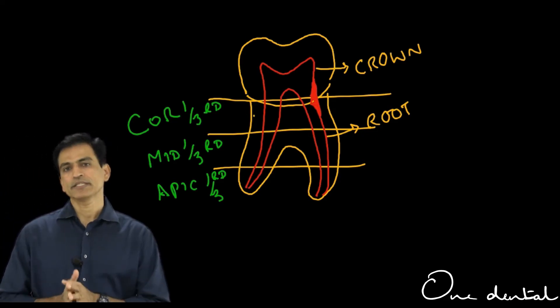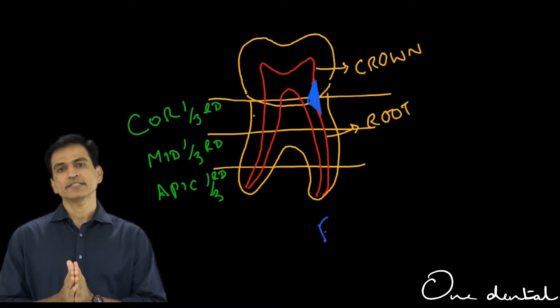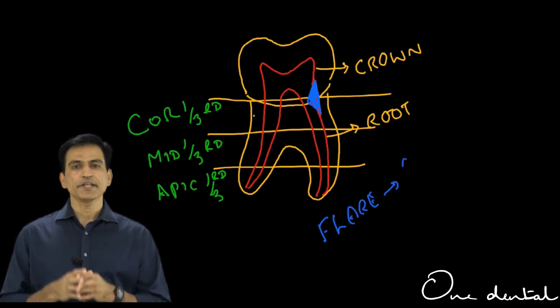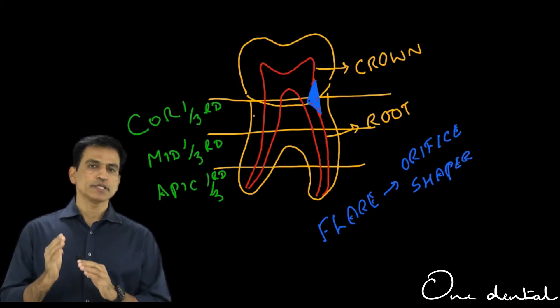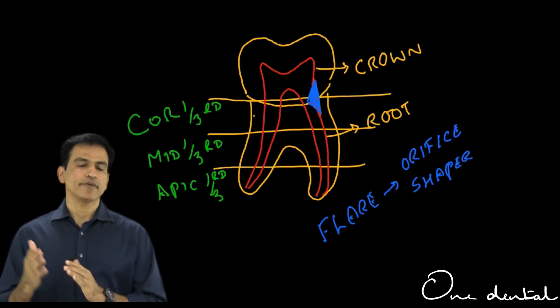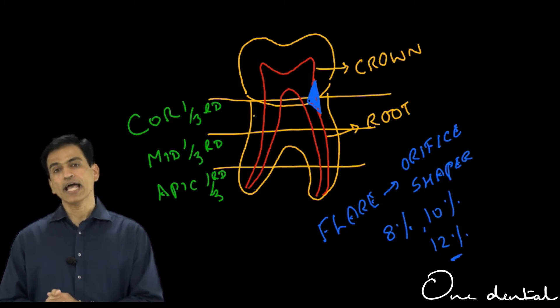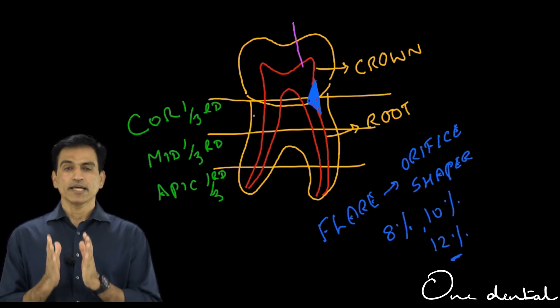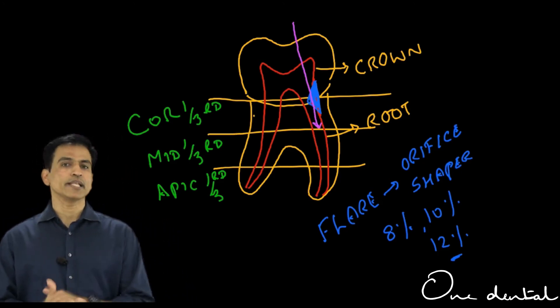To do that, we have a couple of instruments known as orifice shapers from various companies. They are large, stout instruments. What it does is it removes the interferences from the canal, which means at the entry point there is always dentine protuberance—something like a triangular protuberance into the canal space. You need to brush it away, rub it outwards and get the canal straight. That's how you do a coronal flare with tapered instruments which are larger: 8 taper or 10 taper or 12 taper instruments. These are actually non-flexible or less flexible. Some companies will sell you in steel and many are now selling in nickel titanium.